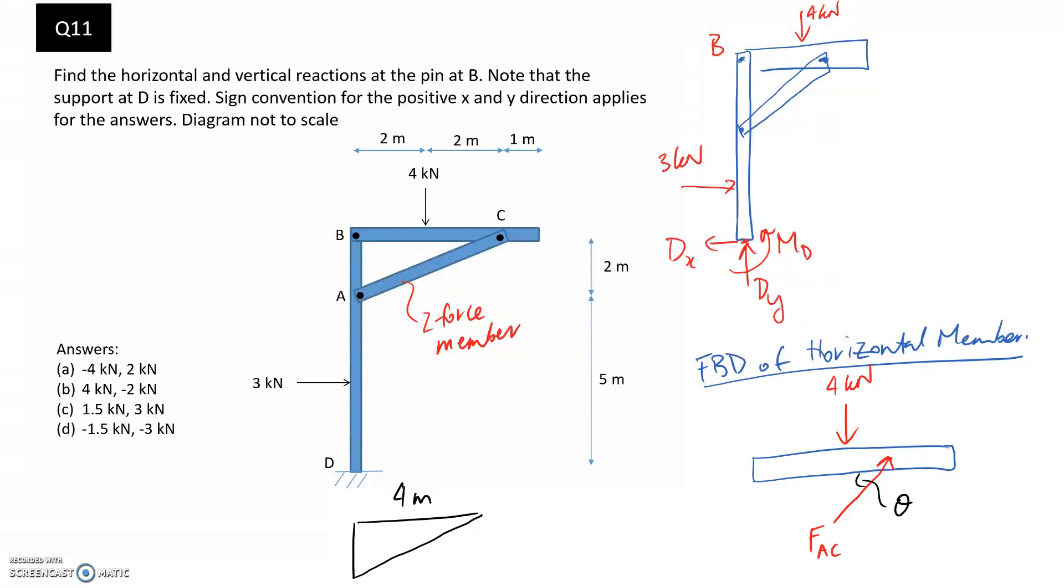We can get it from the diagram itself. If we draw in this triangle, this side has a length of 4 meters and this side has a length of 2 meters. It's a right angle. If you do tan inverse of the opposite over the adjacent, you find that this angle is about 26.6 degrees. That's the angle this force is applied at.